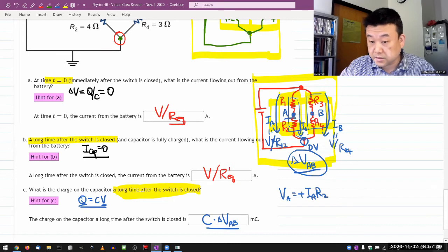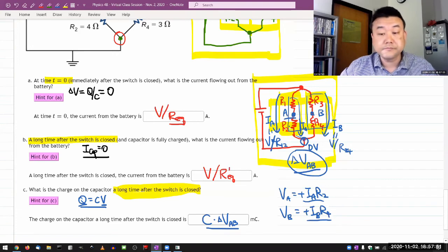And in a similar way, the voltage at point B is going to be plus IBR4. And once you have these voltages, look at their difference. That's your voltage difference, delta VAB. I don't really know which one is going to be higher, but when you plug in the numbers, you will see.